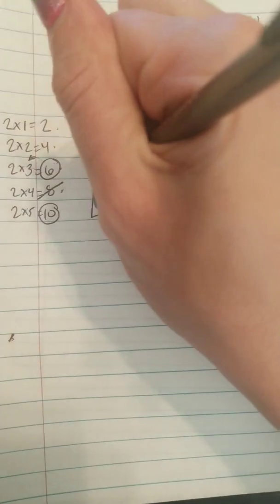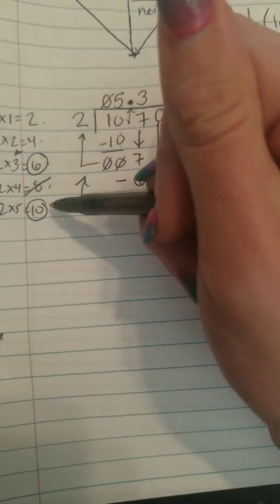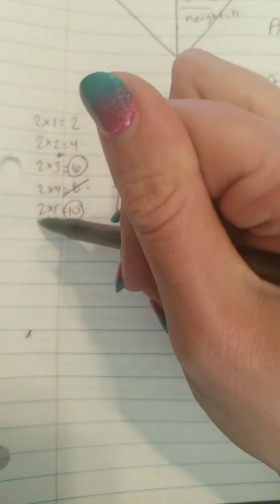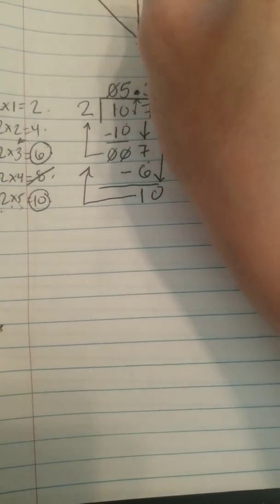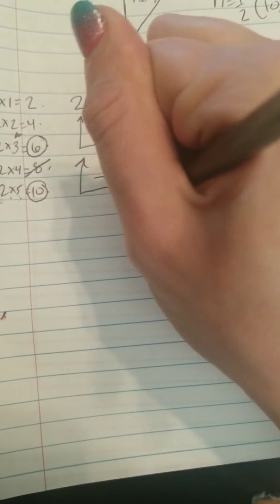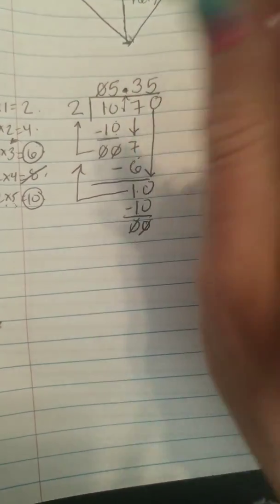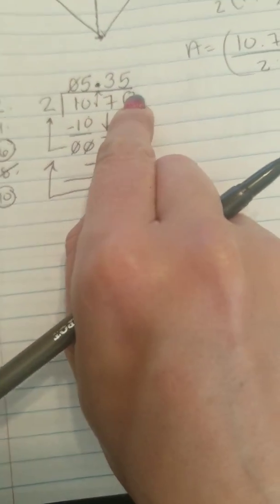If I have 10, can I make groups of 2? We already said that if I have 10, that's 5 groups of 2. So I'm going to put a 5 here. 0 minus 0 is 0 and 1 minus 1 is also 0. So my answer is going to be 5.35.